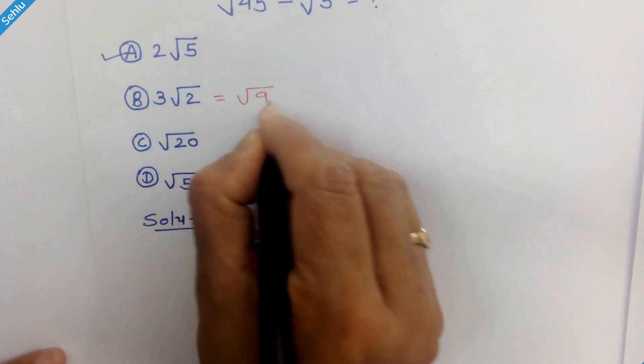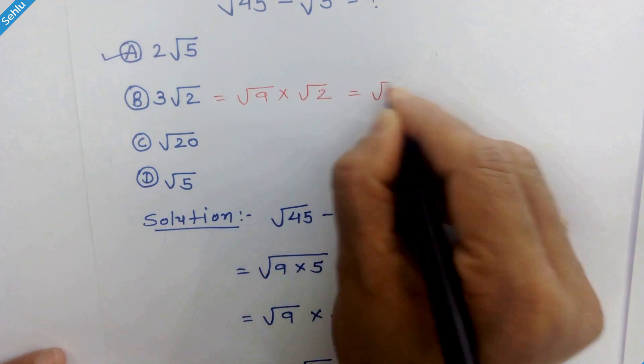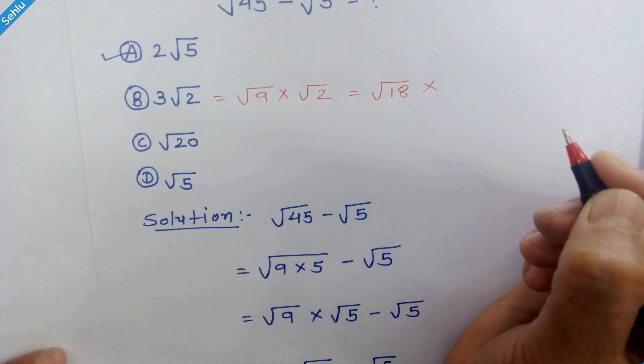So it will be square root of 9 times square root of 2. So it will be square root of 18. So it is incorrect.